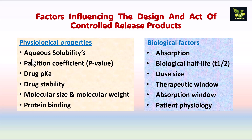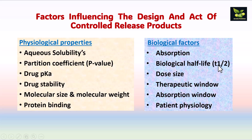Factors to consider when designing a controlled release product are categorized into physiological properties and biological factors. Physiological properties: aqueous solubility should be high, partition coefficient should be high, drug pharmacokinetics must be considered, drug stability parameters must be considered, molecular size and weight should be low, and protein binding should be low. Biological factors include: all factors affecting absorption, biological half-life should be moderate (2 to 6 hours), dose size should be optimum, and therapeutic window, absorption window, and patient physiology must all be considered.